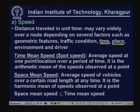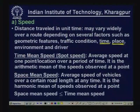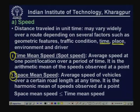Two types of speed measurements are normally used in traffic engineering. One is time mean speed (TMS), often called spot speed. The other is space mean speed (SMS). Time mean speed is the average speed at one point or location over a period of time — measured at a fixed location and averaged over time.